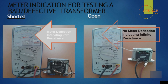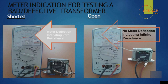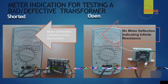Every transformer has a different type of test, but all depend on the basic fact that a transformer is a wire with resistance. High resistance indicates the primary winding; low resistance indicates the secondary winding. Zero resistance means that winding is shorted; infinite resistance means the winding is open. The recommended approach is to look up the transformer online, label the terminals, then test for shorted or open windings.